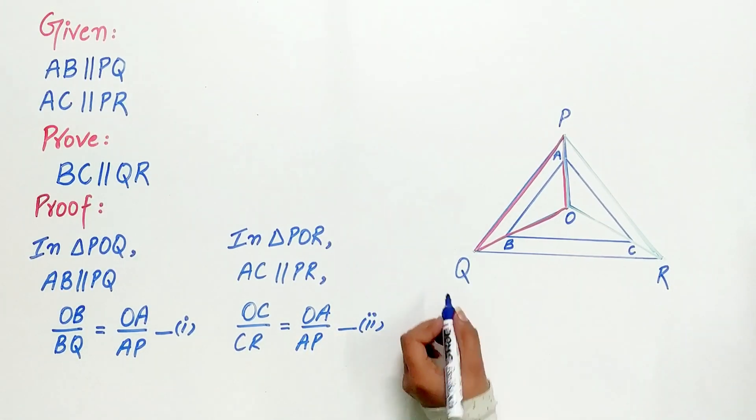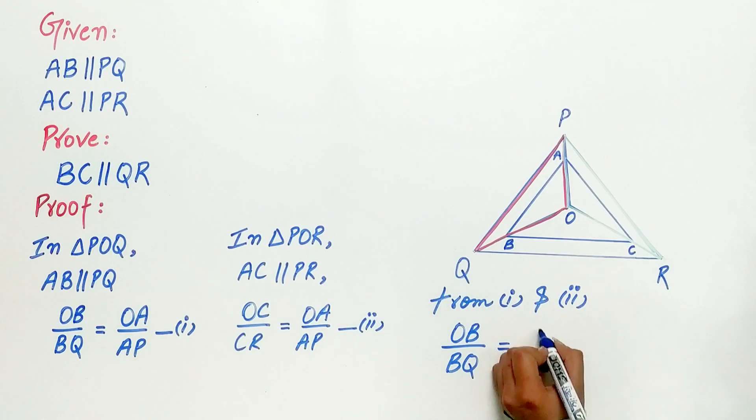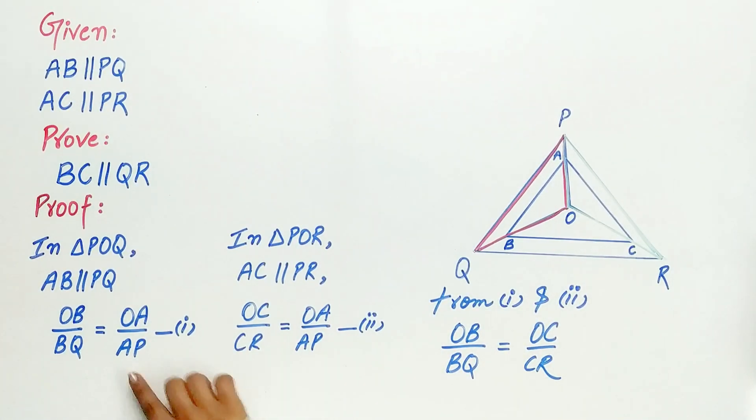From equations 1 and 2, OB/BQ equals OC/CR, because the right-hand side of both equations is the same.